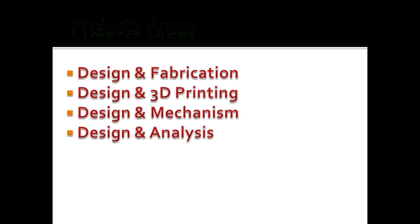So first one is design and fabrication. In that, you have to design that model in software and you have to create that model manually. So you can use your college workshop or you can go outside and manually make that model. Next one is design and 3D printing. Compared to fabrication, this is a little bit easy. You can design that model in software and directly you can take a 3D print of that project.